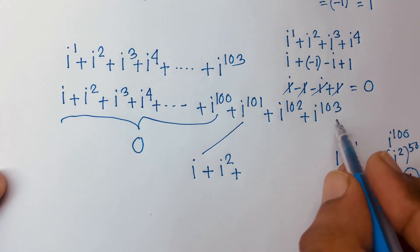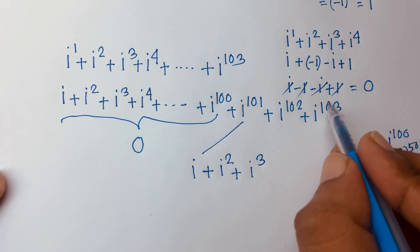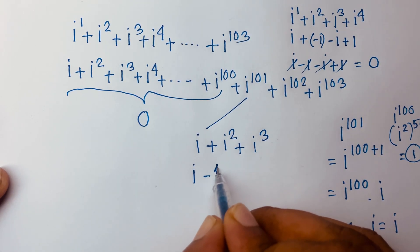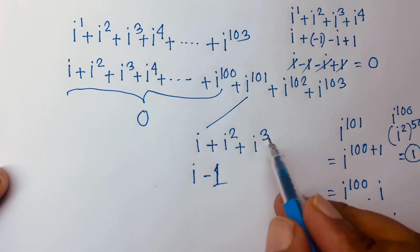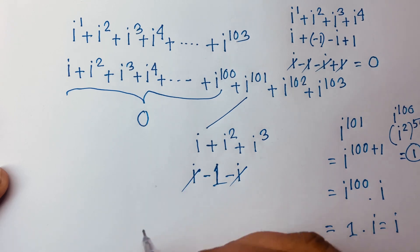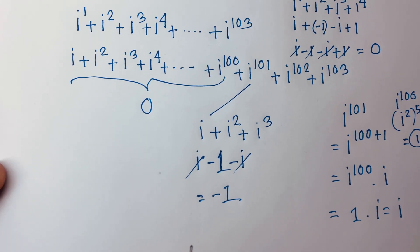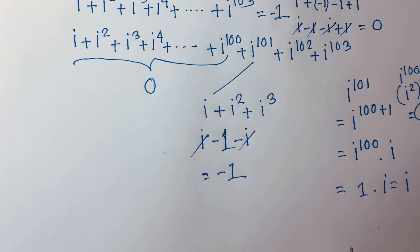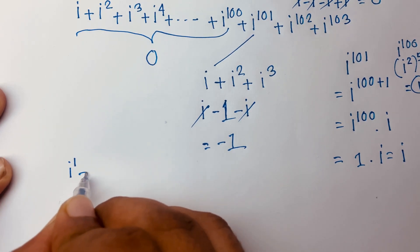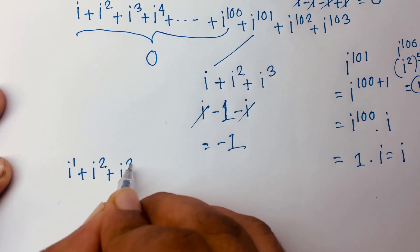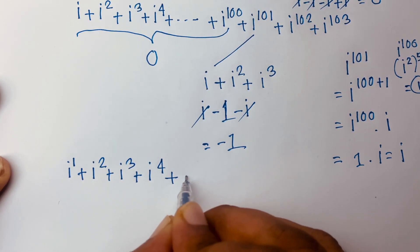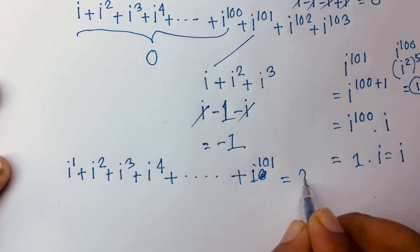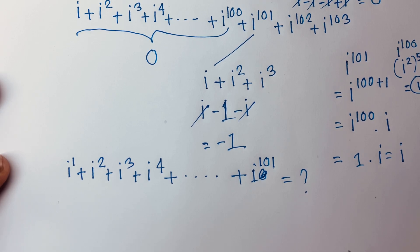And i to the power 103: dividing 103 by 4 gives remainder 3, so i to the power 103 equals i to the power 3, which is minus i. Now combining the remaining terms: i plus minus one plus minus i. The i's cancel, leaving minus one. So the final answer for the second problem is minus one. And your homework question is: i to the power 1 plus i to the power 2 plus i to the power 3 plus... plus i to the power 101 — what does it equal?